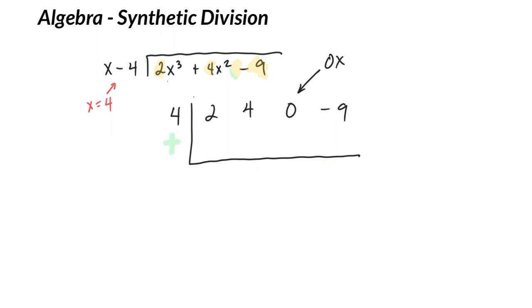All right, the first number drops directly down, 2. 4 times 2 is 8. Add. 4 times 12 is 48. Add. 4 times 48. Add.